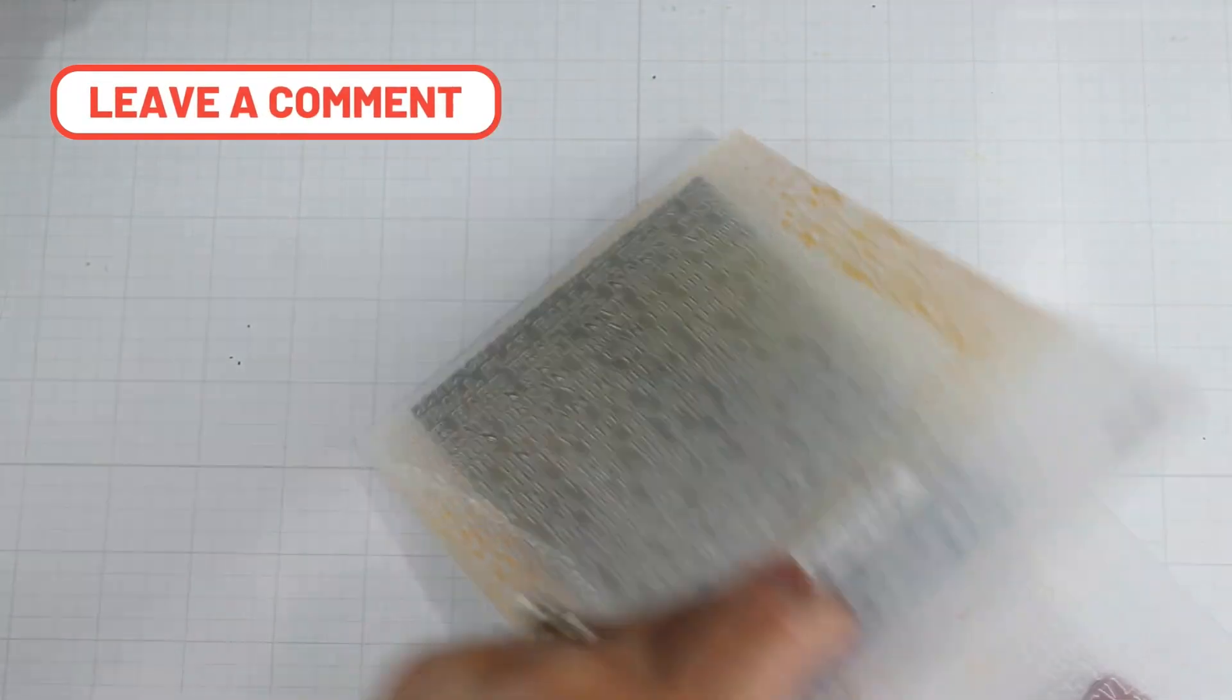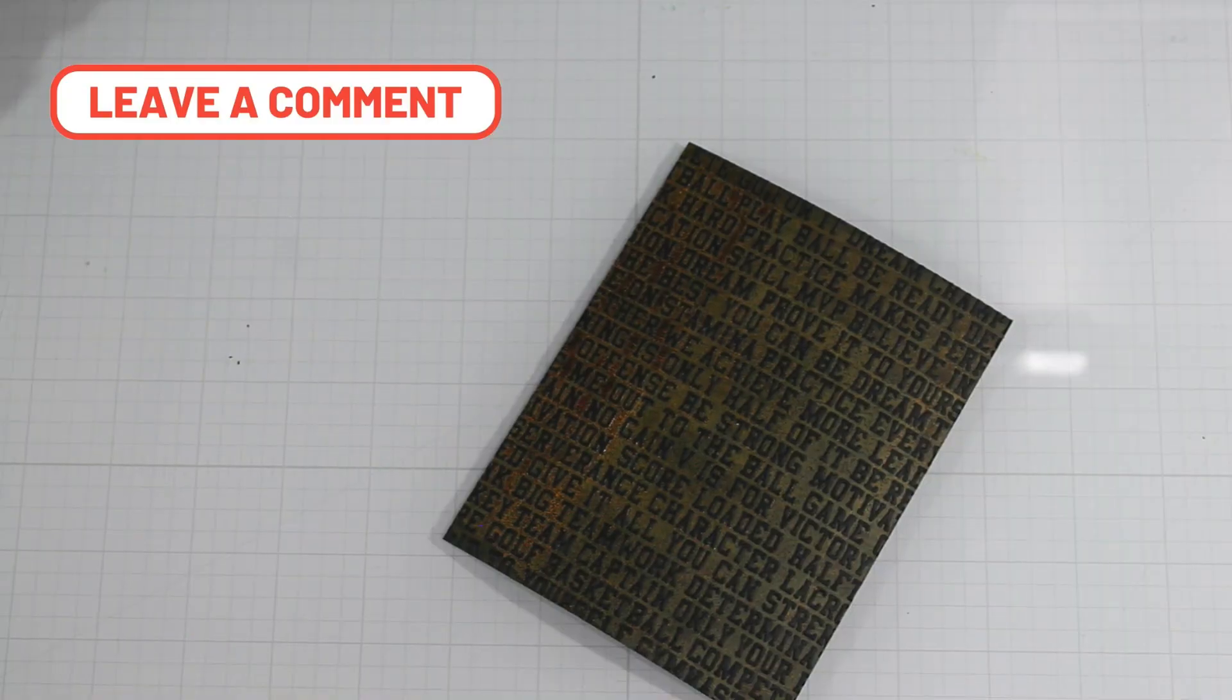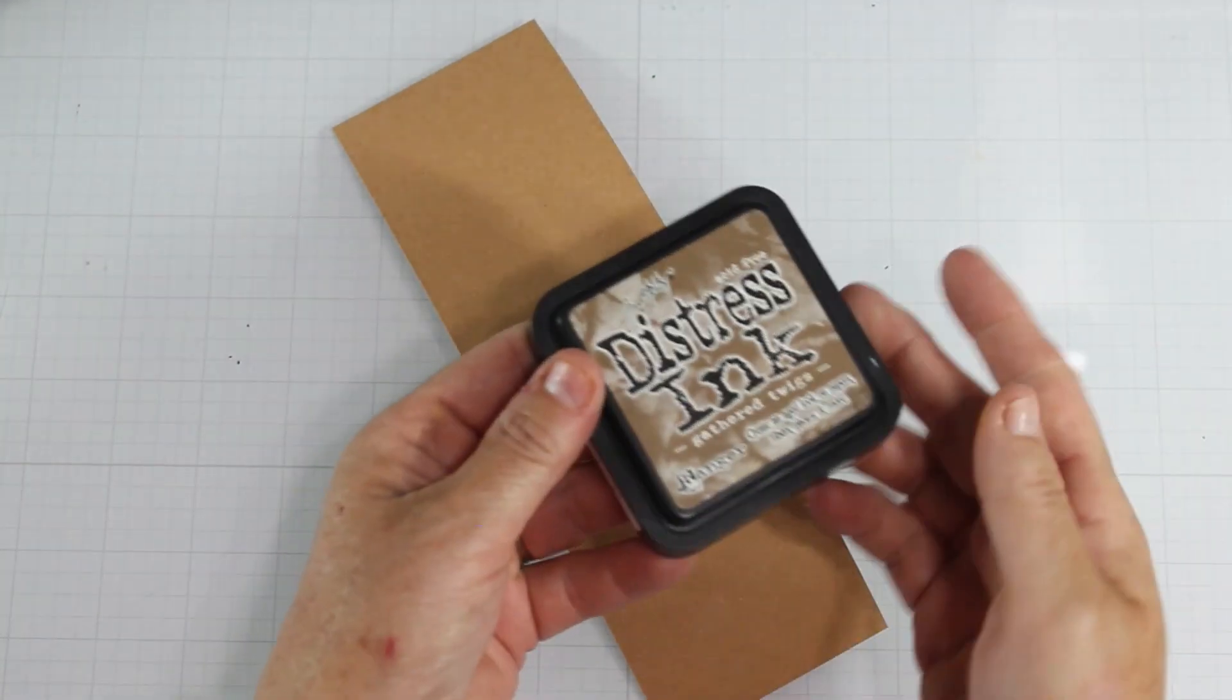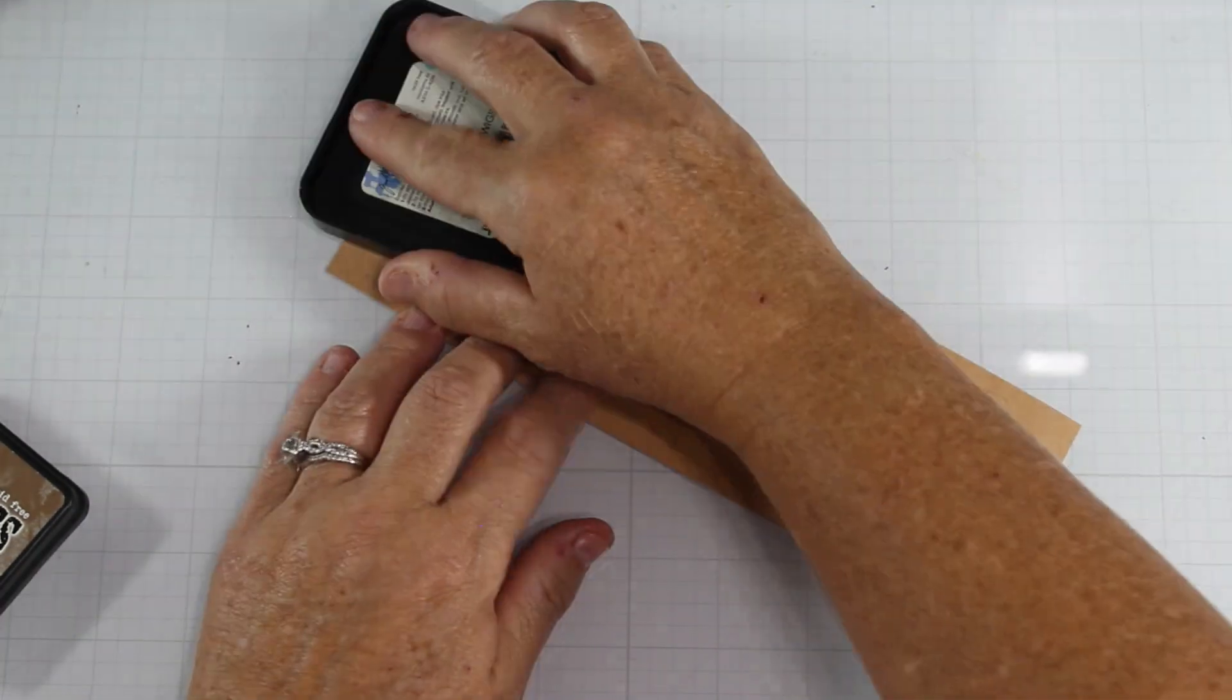if you do that side, once you run it through your embossing tool, like your platinum, you will then impress that ink into the card panel, leaving the words in black.